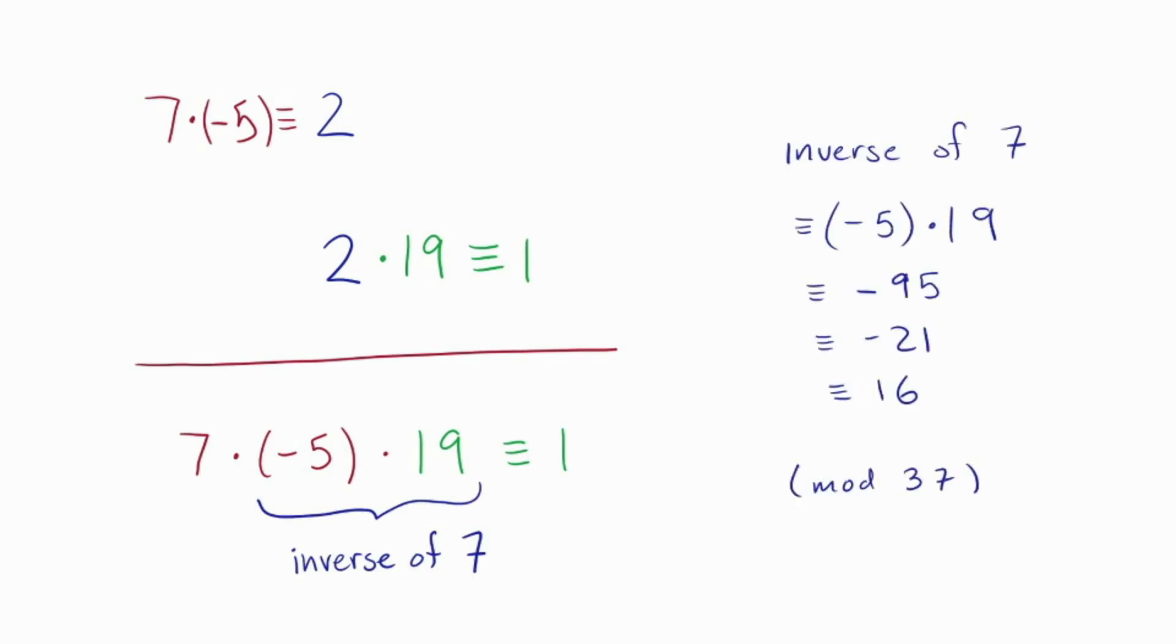Then I could combine these two facts on the screen to get the inverse of 7, right? The inverse of 7 would be negative 5 times 19. If we multiply this out, we just get negative 95, which comes out to 16, modulo 37. So basically, I've replaced the problem of inverting 7 with the problem of inverting 2.